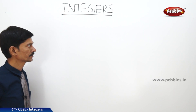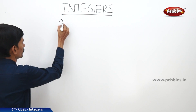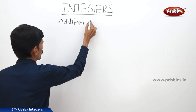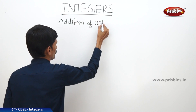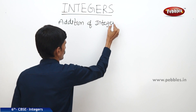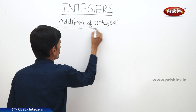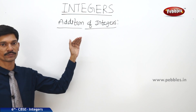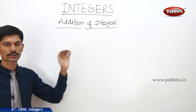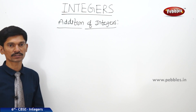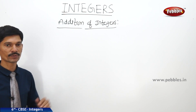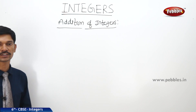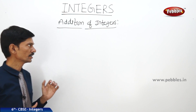Now let us learn the addition of integers. In the case of addition of integers, the two integers may be positive integers, or the two integers may be negative integers, or one integer may be positive and the other integer is negative. In these different cases, let us learn how to add the integers.